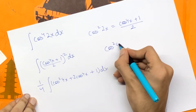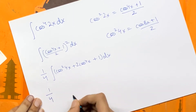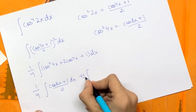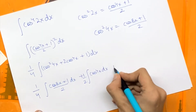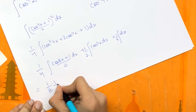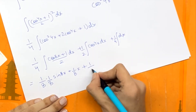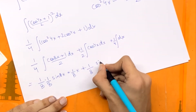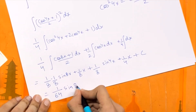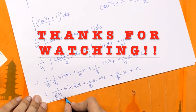We can write cos square 4x as cos 8x plus 1 upon 2. So now we have 1 by 4 times the integral of cos 8x plus 1 upon 2, plus 2 cos 4x, plus 1 dx. Simplifying, we get 1 by 64 times sine 8x plus 1 eighth sine 4x plus 3 upon 8 times x plus c, and that is the answer to the final integral.